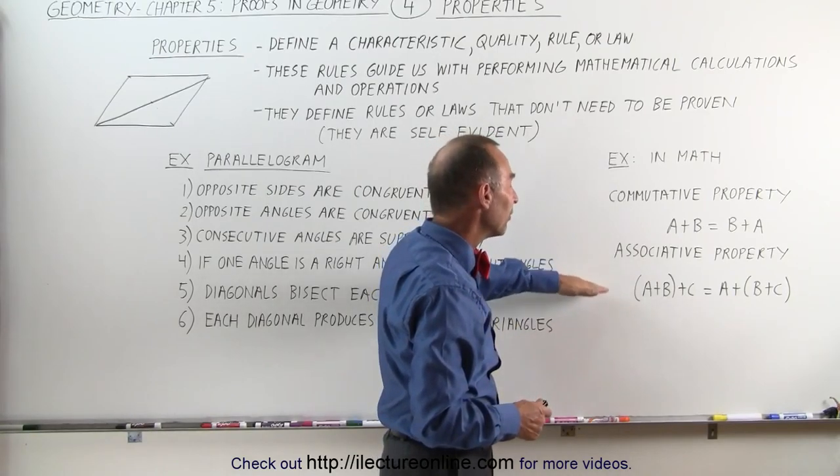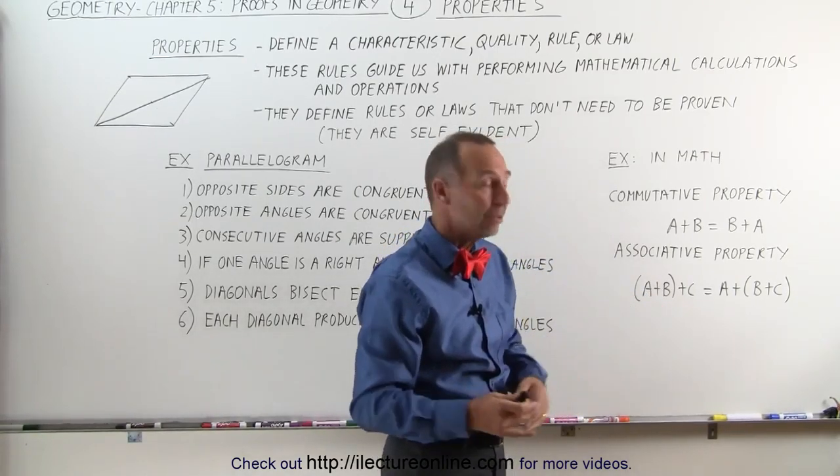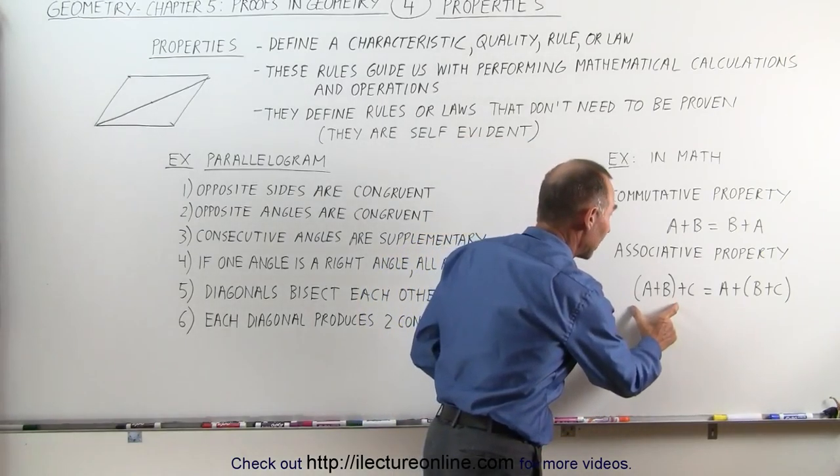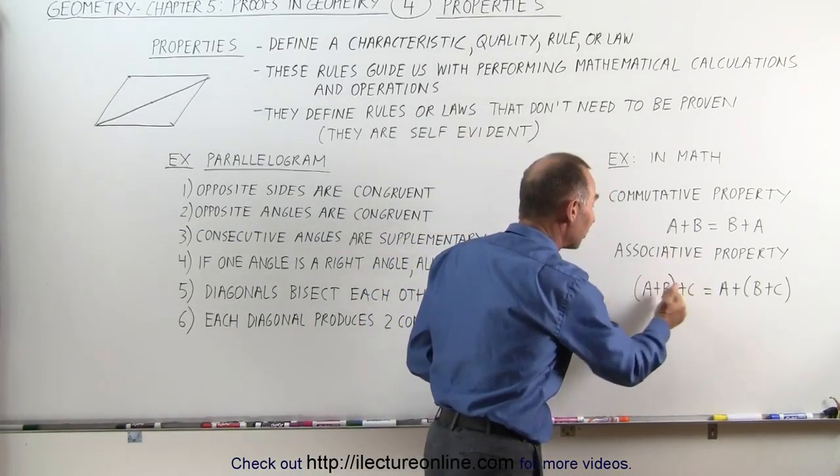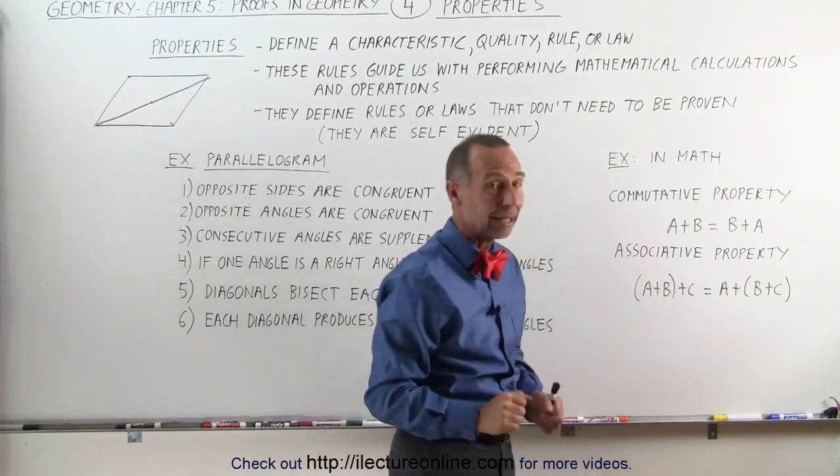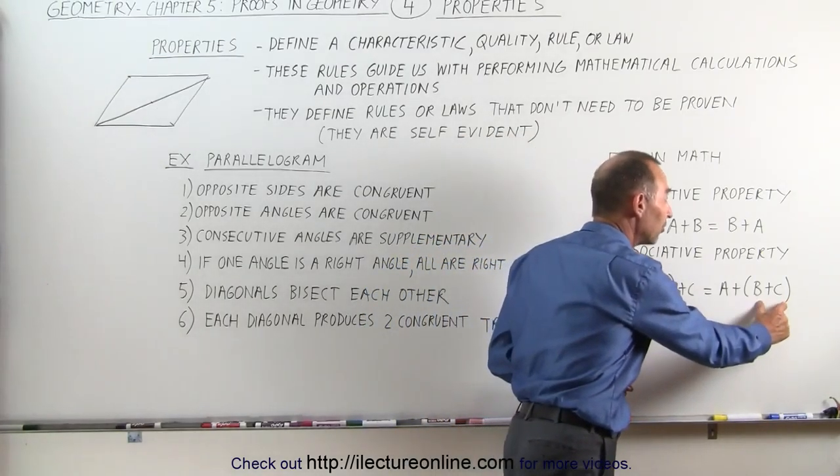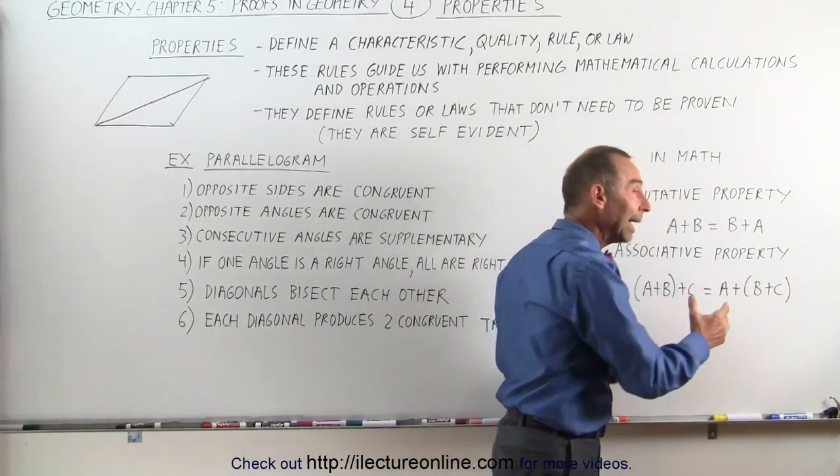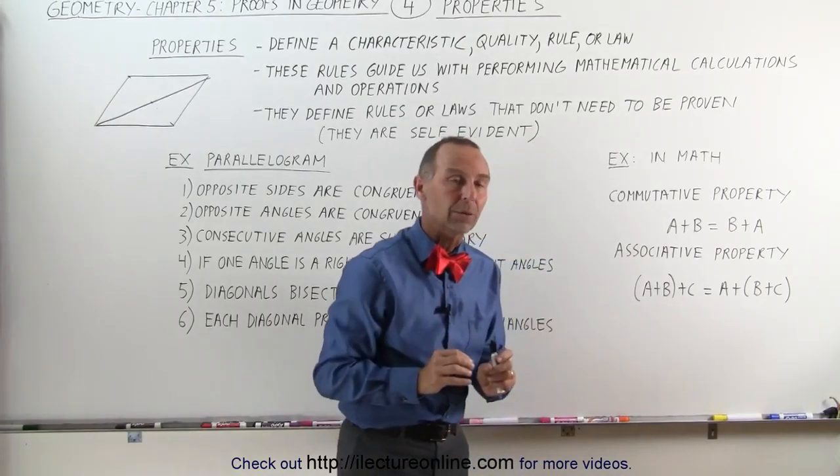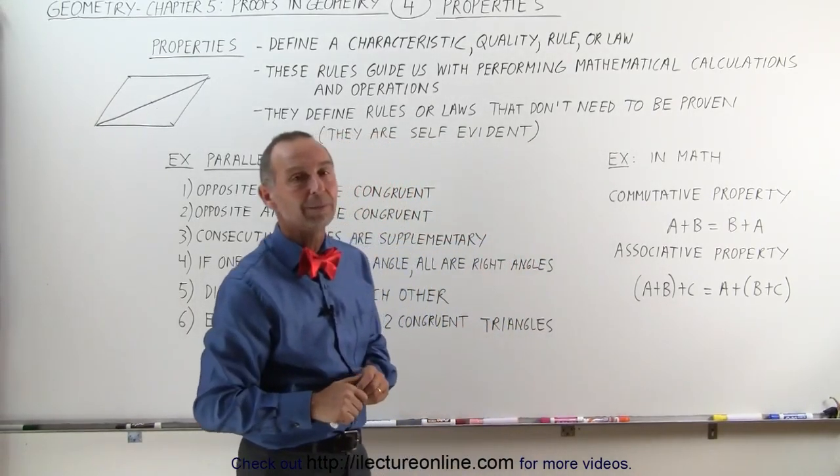Associative property means that if we have three, for example, A, B, and C, and we add them together, we can first associate the first two together. We can add A plus B first, and then add C to that. Or we can add B plus C first, and then add A to that, and those two sums are equal. That is a property of addition as well.